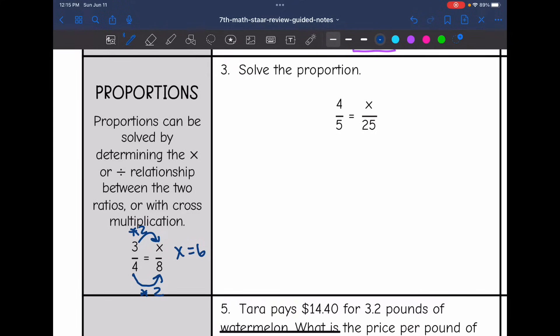So you can solve proportions with the relationship like that, or you can also cross multiply. So on number three, it wants me to solve this proportion. I have four over five equals x over 25. I can easily see that five times five would get me to 25. So if I do four times five, that will tell me what x is, and x is 20.